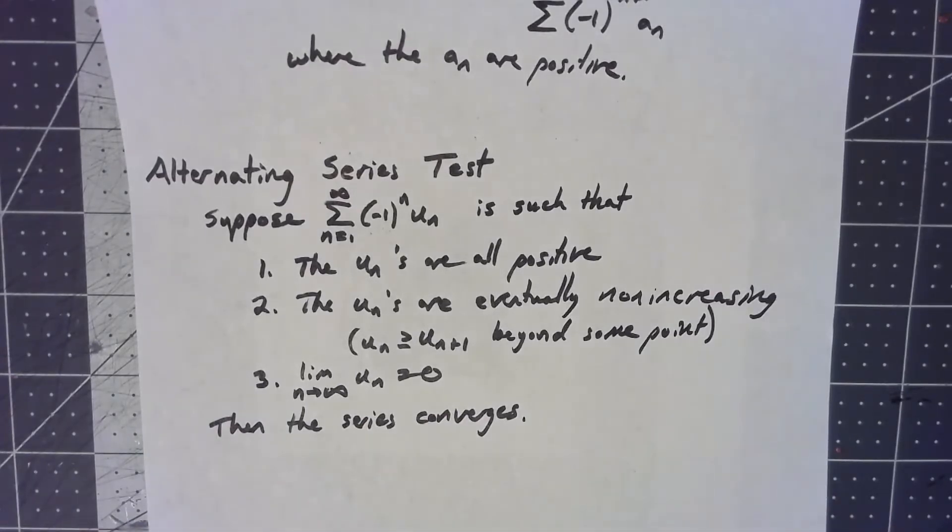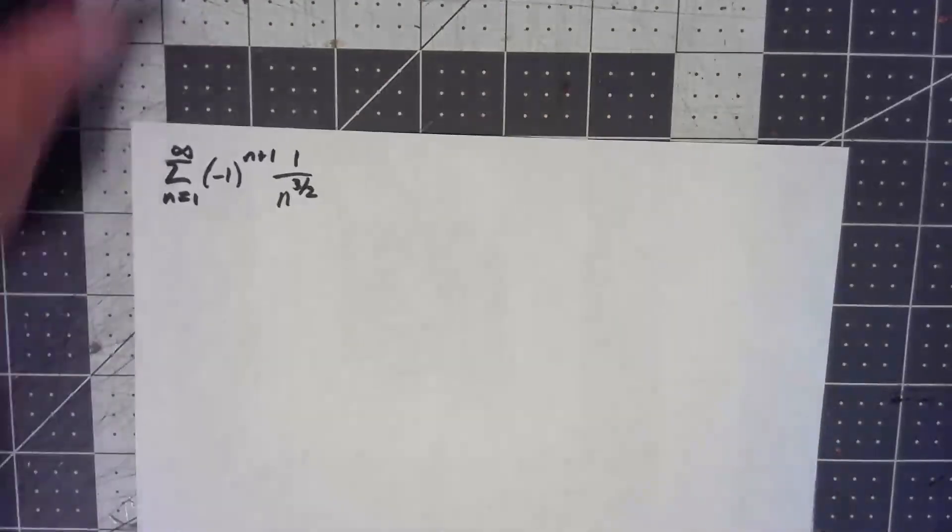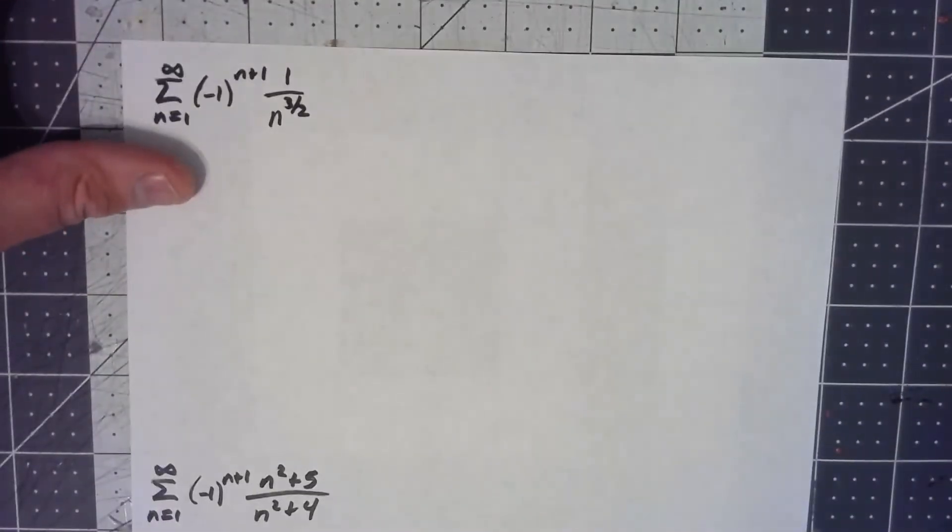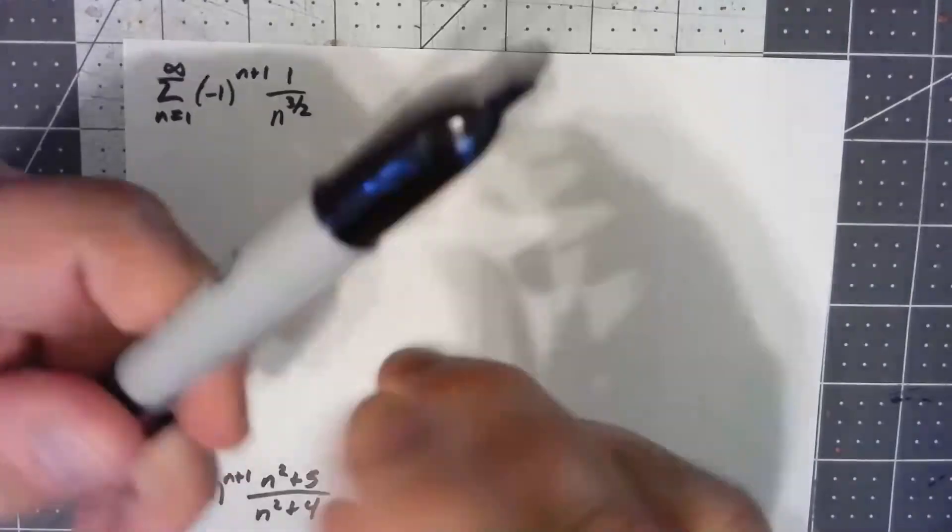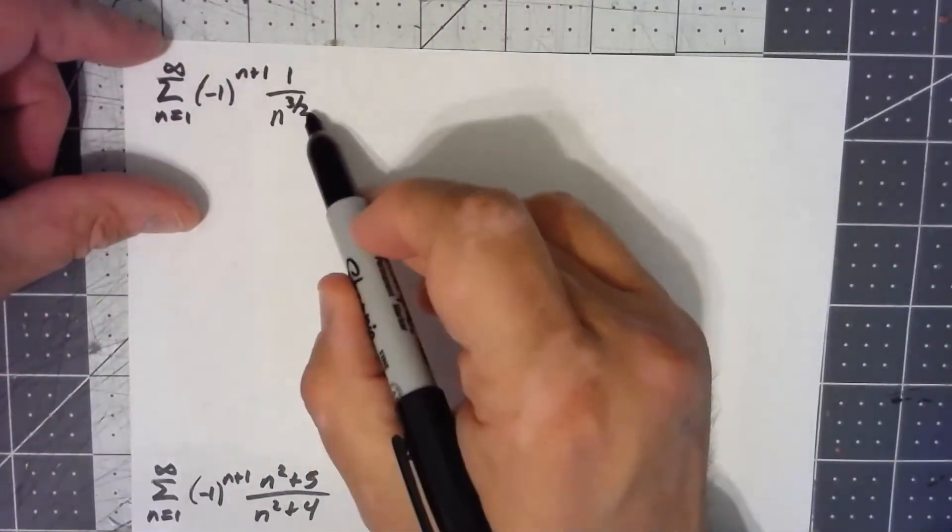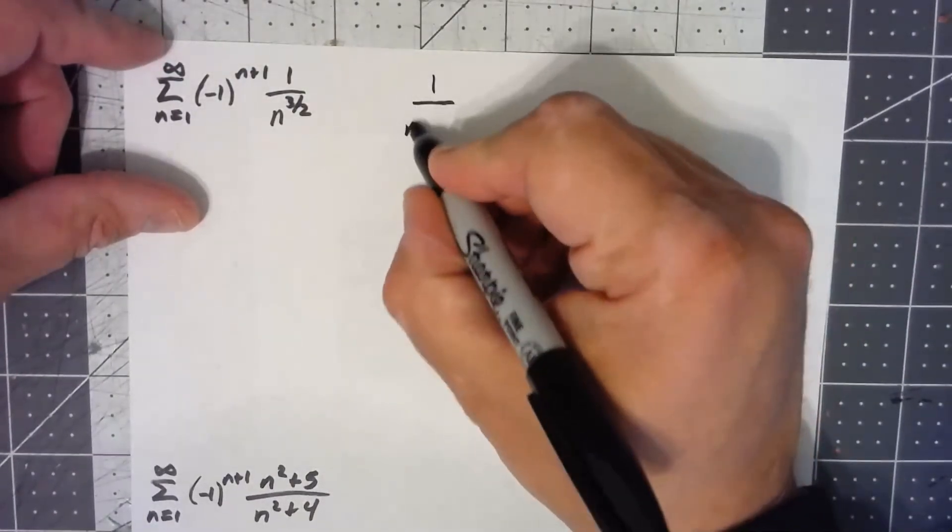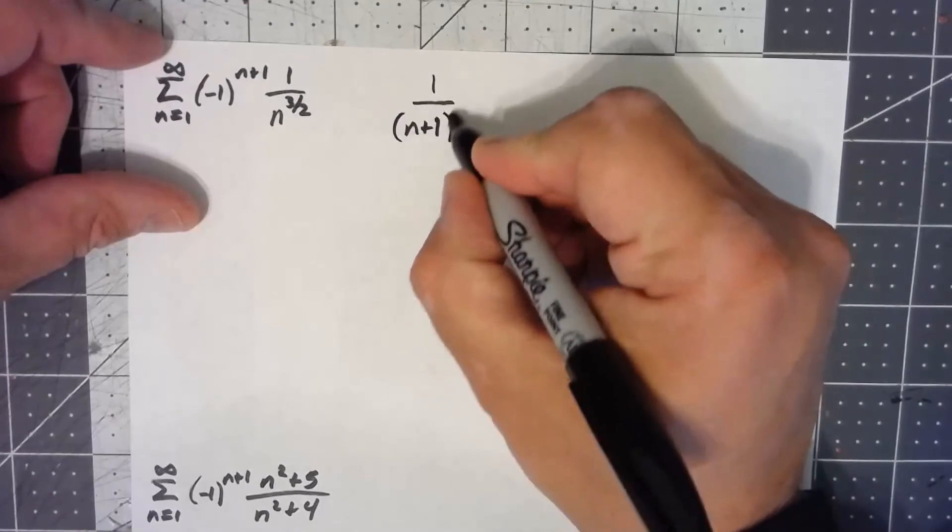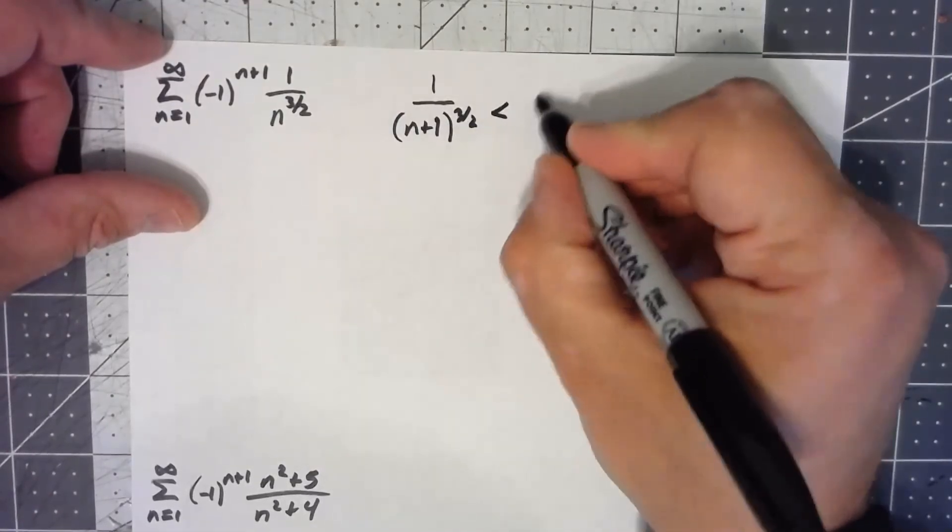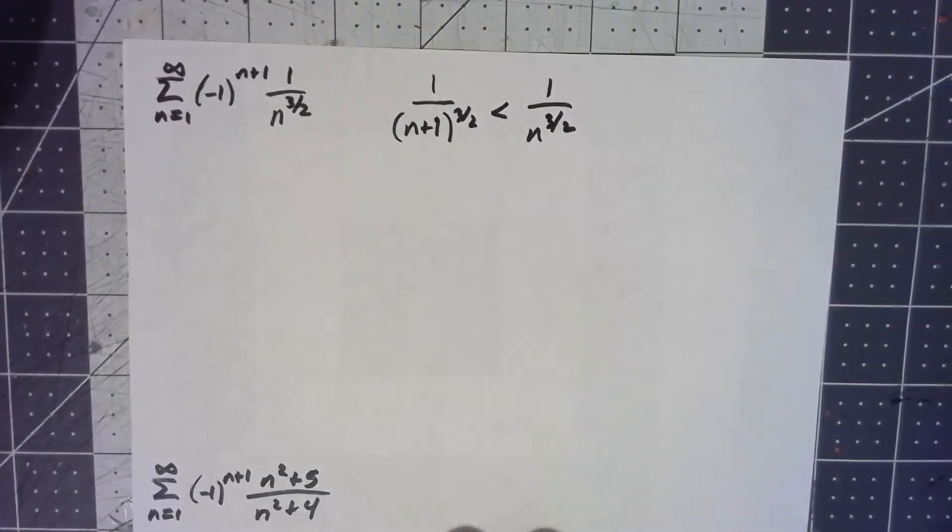So let's take a look at a couple of examples, but this is honestly super, super easy to use. We've got an alternating series here. This part is always positive, and one over n plus one to the three halves is always going to be less than one over n to the three halves. Because that's true, we know we've got this non-increasing thing.